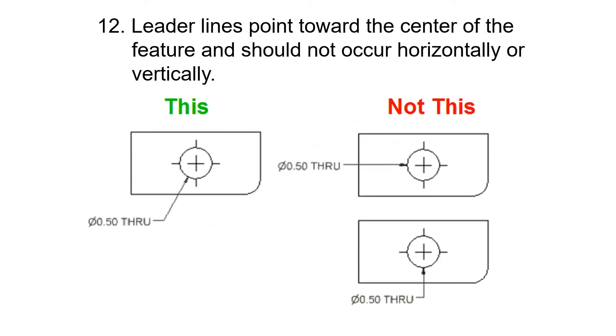Leader lines point towards the center of the feature and should not occur horizontally or vertically. This is messy. This is messy, especially because this looks like it could be—is that an object line? I don't really know what's happening. The standard is to have your leader lines at an angle like that.